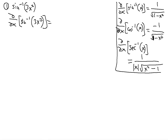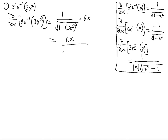Differentiating the arcsine gives 1 over the square root of 1 minus — and be careful here — because what you're squaring is not x, you're squaring 3x squared. So you put the 3x squared and then square it. Then you differentiate the inside, which gives 6x. That yields 6x over the square root of 1 minus 9x to the 4th.